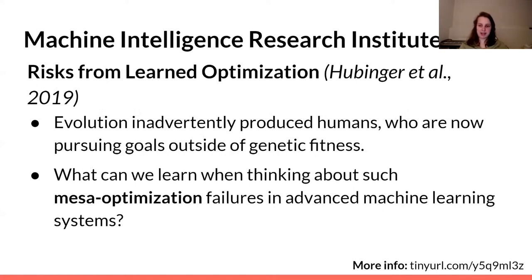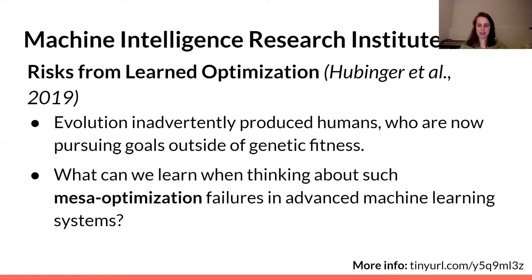I also wanted to mention a paper from the Machine Intelligence Research Institute written by Evan Hubinger called 'Risks from Learned Optimization.' This paper, from 2019, really formalizes and pins down a lot of ideas that have been floating around the AI safety community. The basic idea is best explained via analogy to evolution: evolution is an optimizing process that, in optimizing for genetic fitness, produced humans — who are themselves optimizers that might optimize for goals that are not genetic fitness. Similarly, machine learning systems trained via gradient descent as an outer optimizer have a neural network inside that could itself act as an optimizer with goals outside the original specified goals. Evan calls potential failures from that optimization 'mesa-optimization failures.'